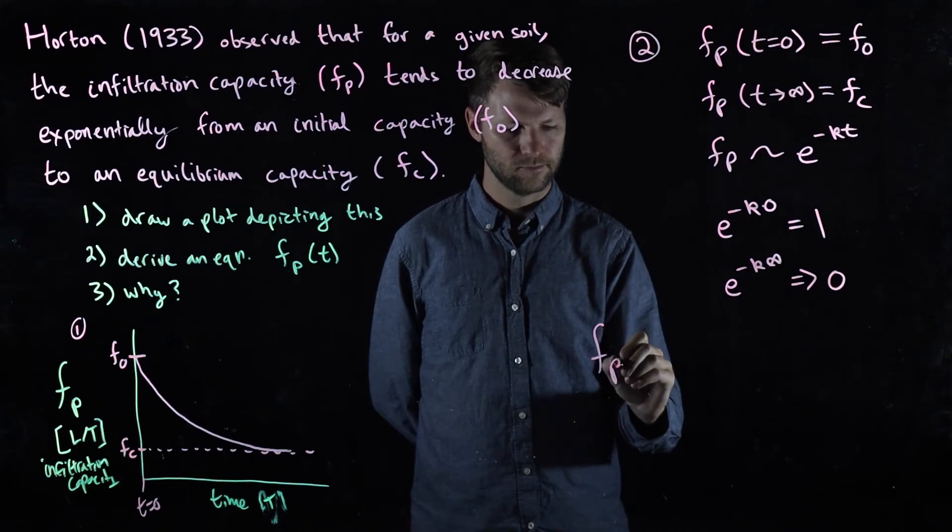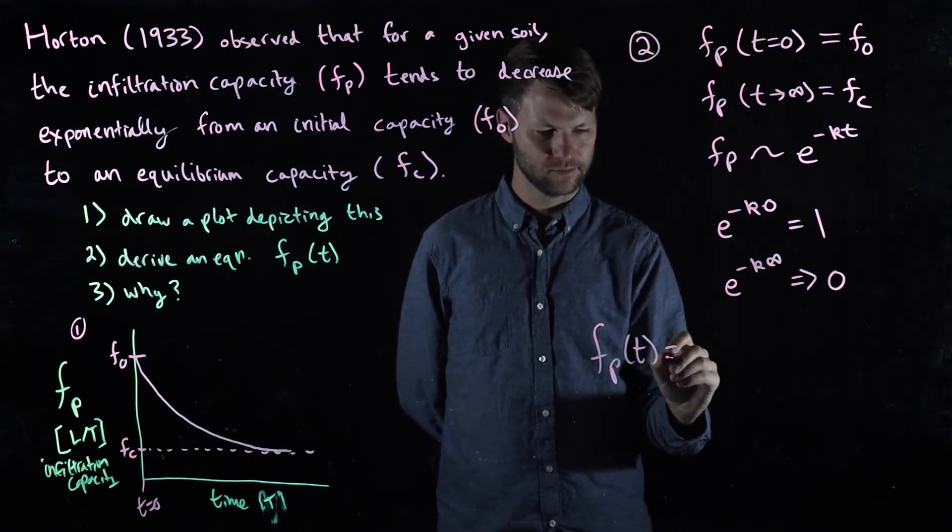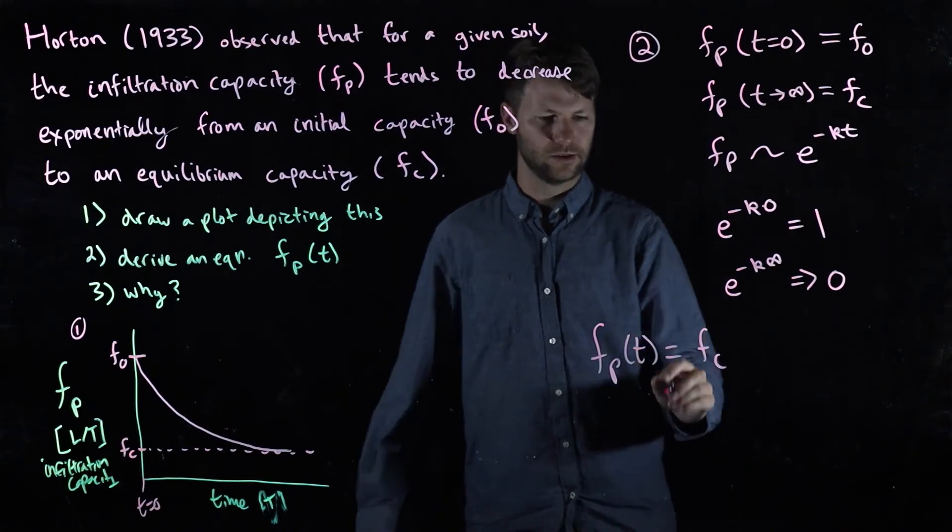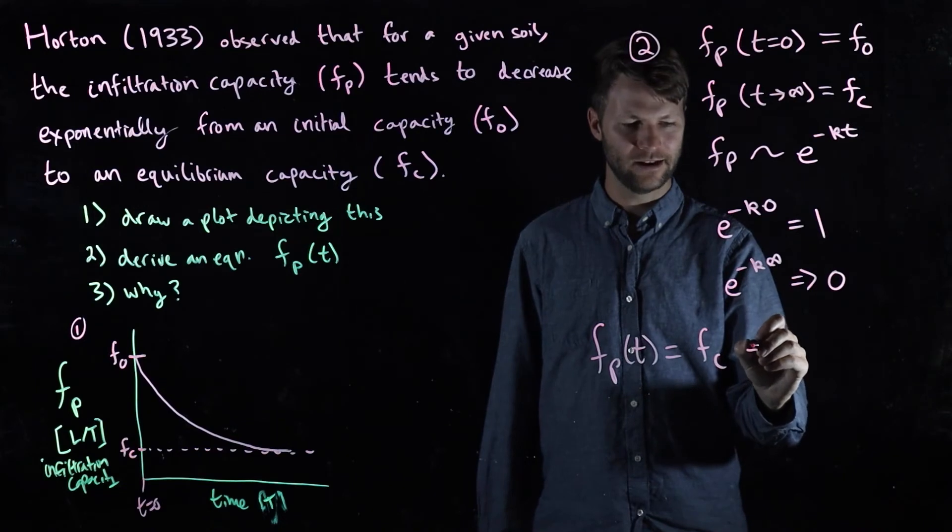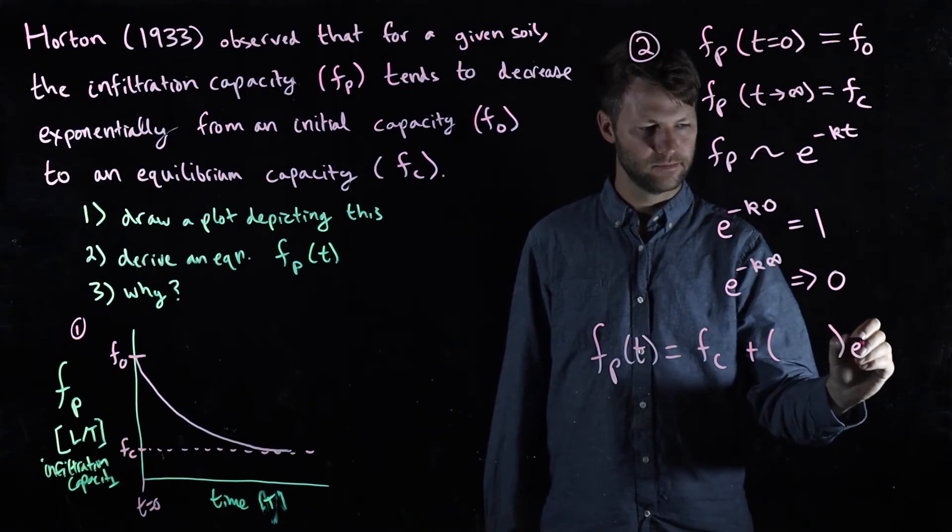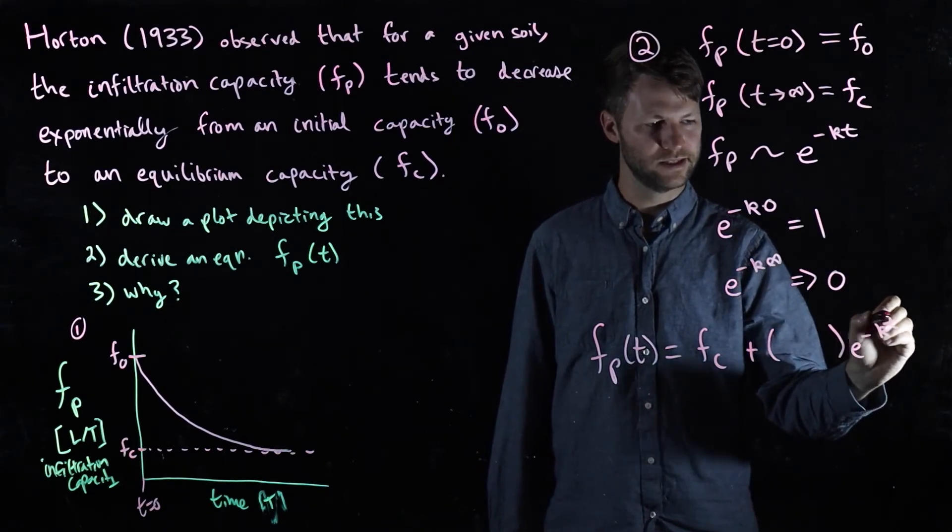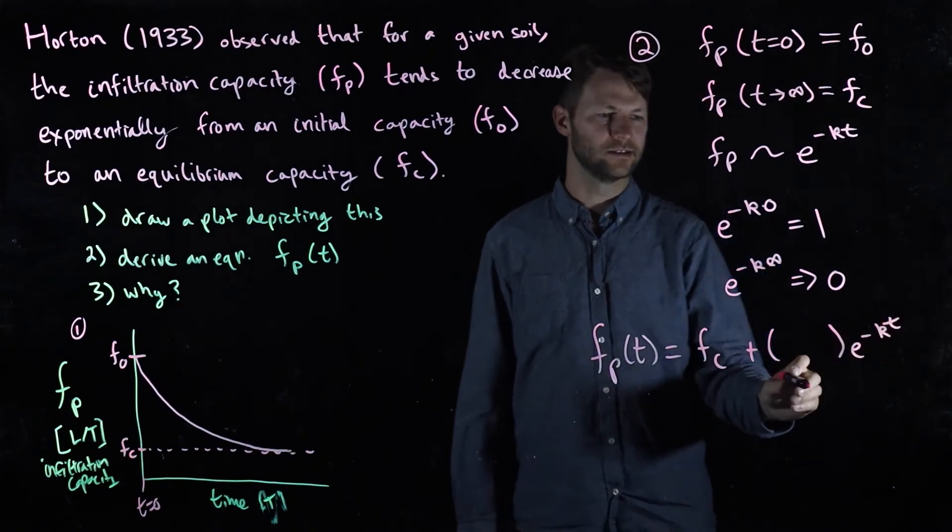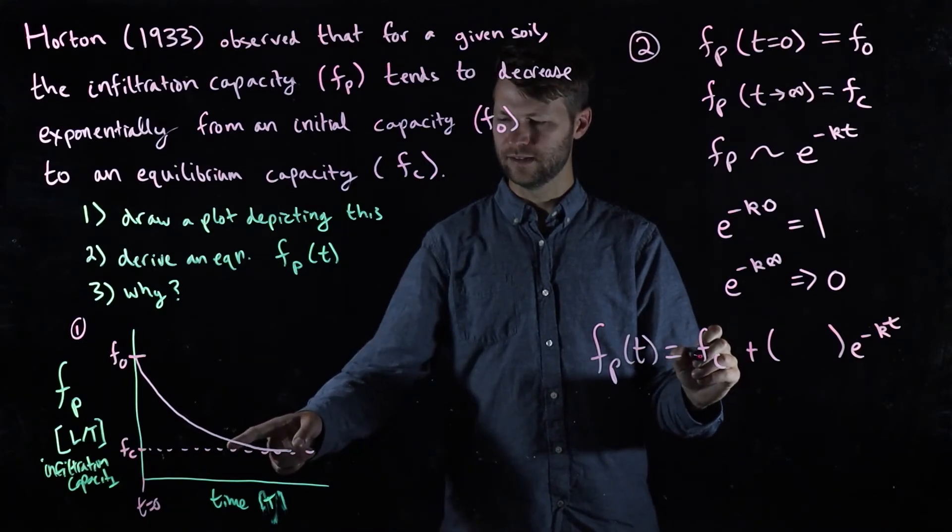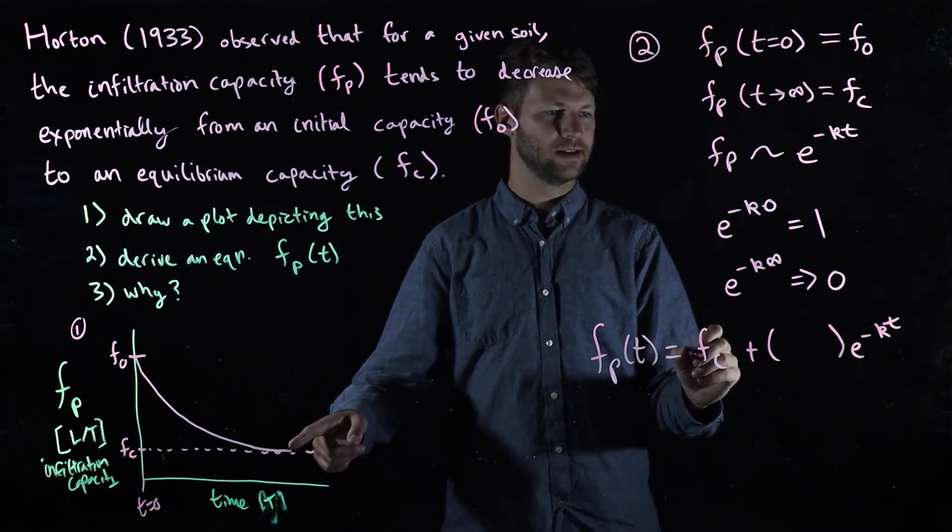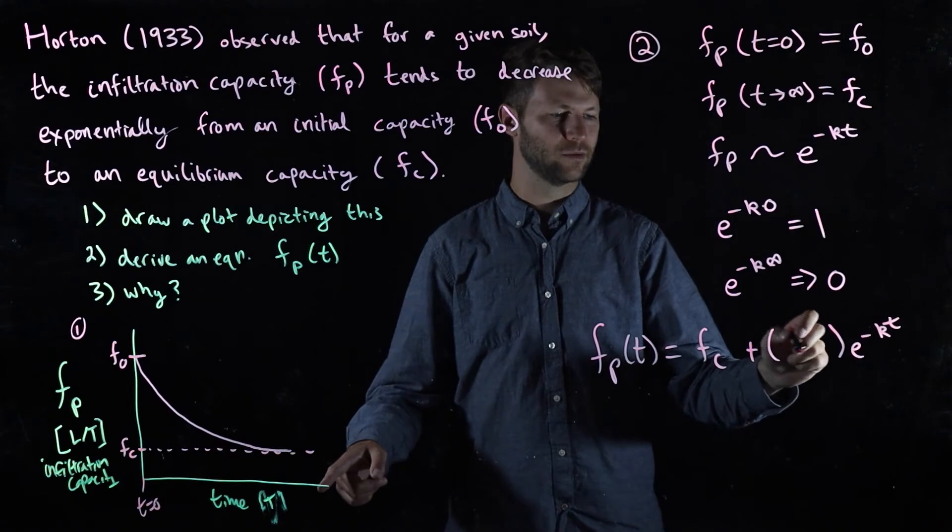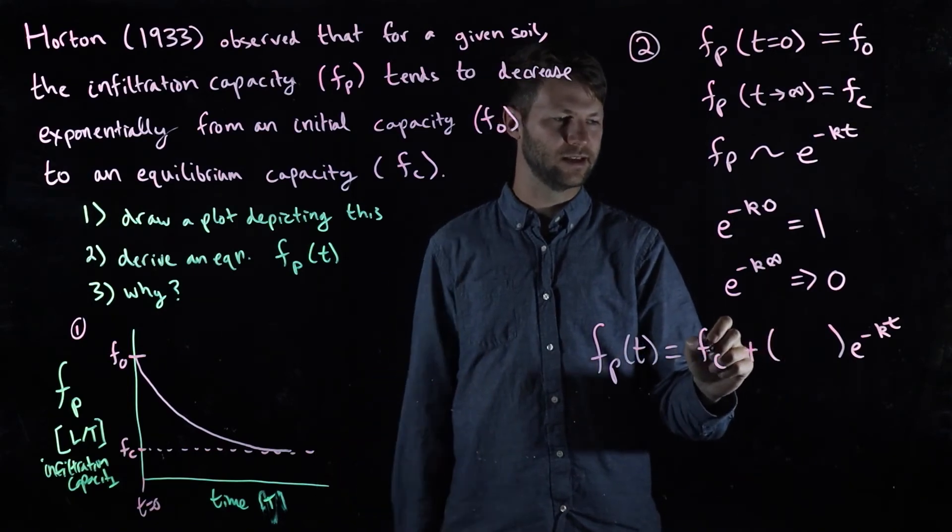I know that in the limit we need to get to f_c. So I'm going to throw this in here, and then I'm going to add on some other term here and put this other piece of the puzzle that I know has got to be in here. So if this is what it needs to get to when t is a really big number, and I know that when t is a really big number this is going to go to zero, no matter what I put in here, this is going to be the only thing left.